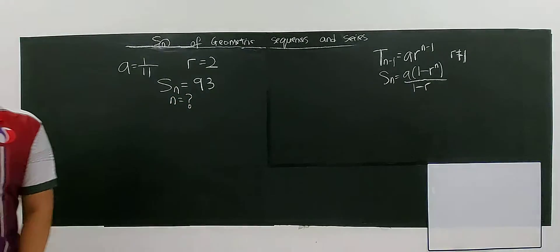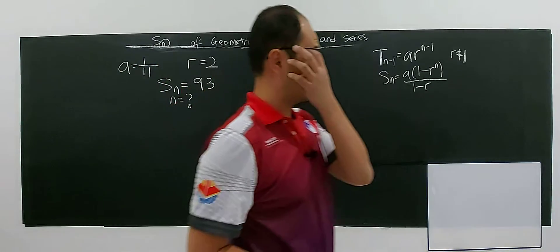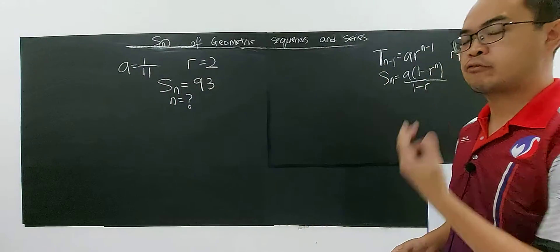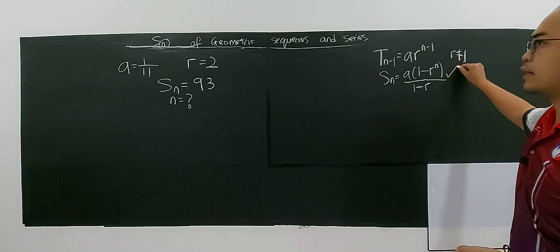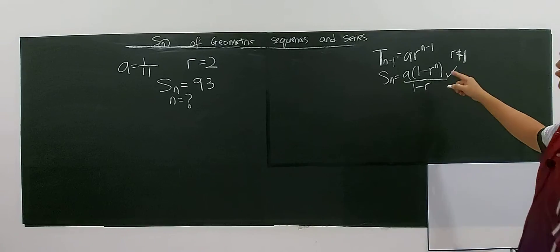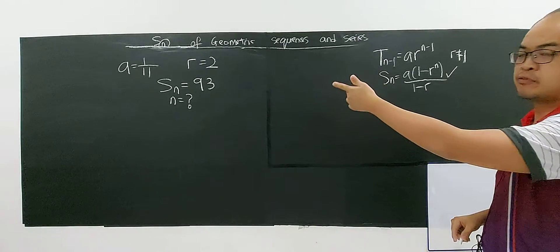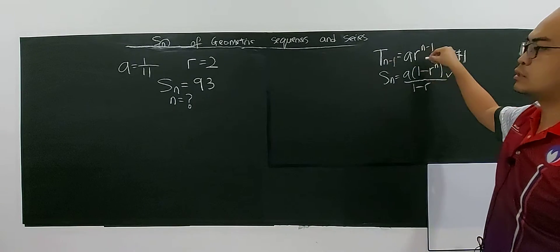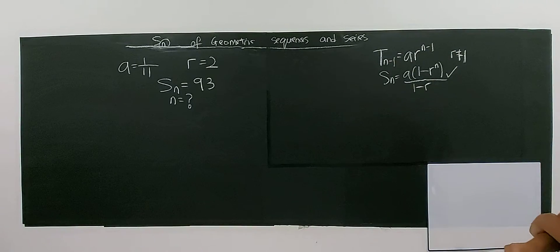So it means that you need to find the value of N, so of course you have to apply the correct formula. For this case, I think there is only one formula that involves, because they just give you the sum of the first N term, so I'm not going to use this N term formula.